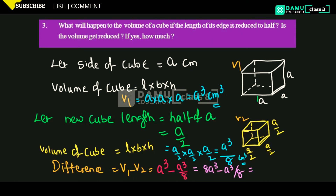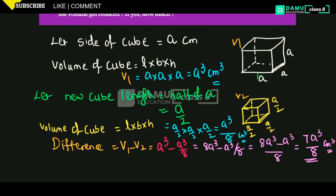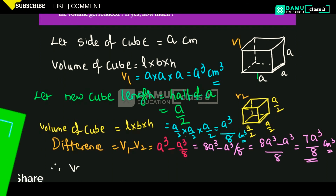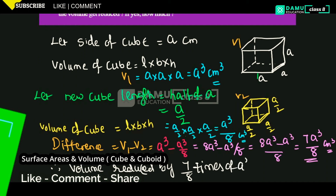What you will get here is: 8A cube minus A cube by 8, which equals 7A cube by 8. So the volume is reduced by 7A cube by 8. Volume decreased by 7 by 8 times. Therefore, volume is reduced by 7 by 8 times of A cube centimeter cube.